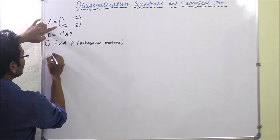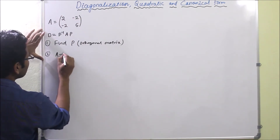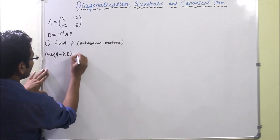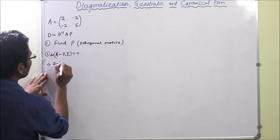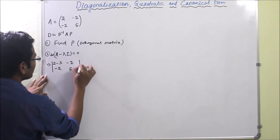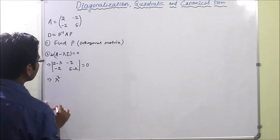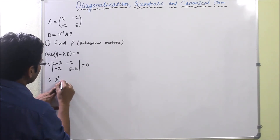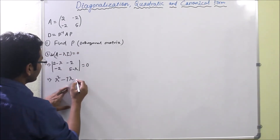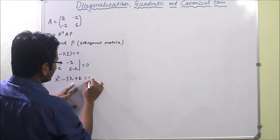To find the eigenvalues we compute the characteristic equation: det(A − λI) = 0. This gives the determinant of [[2−λ, −2], [−2, 5−λ]] = 0. Expanding, we get λ² − 7λ + (det A) = 0, where det A = 10 − 4 = 6, giving λ² − 7λ + 6 = 0.